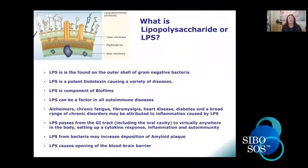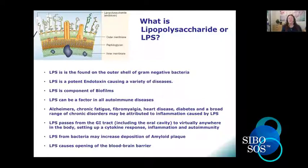So this LPS — what is it? It's found on the outer shell of gram-negative bacteria. It's an endotoxin and a component of biofilms. What a lot of people don't know is that it's a factor in almost all autoimmune diseases, in things like chronic fatigue and fibromyalgia, heart disease, even diabetes. Understanding why there's a relationship between biofilms in your gut and systemic problems is really important.